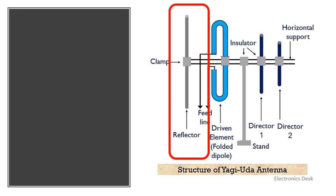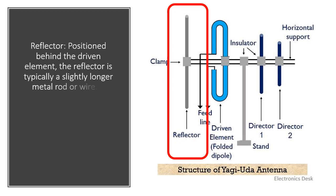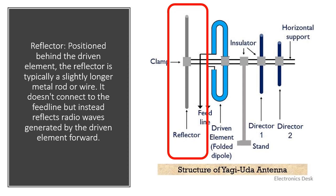The reflector is positioned behind the driven element. The reflector is typically a slightly longer metal rod or wire. It doesn't connect to the feed line but instead reflects radio waves generated by the driven element forward.